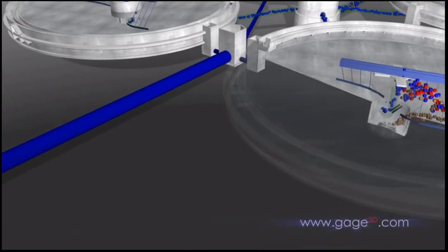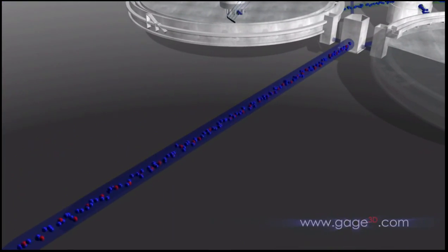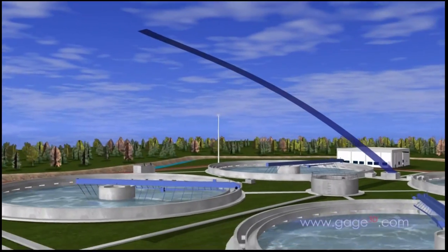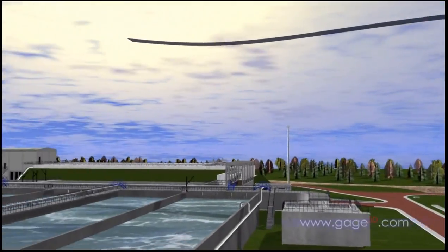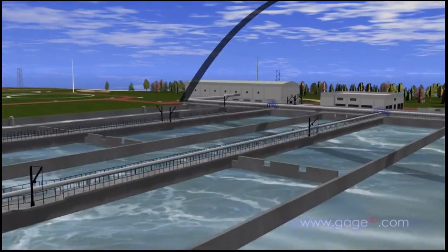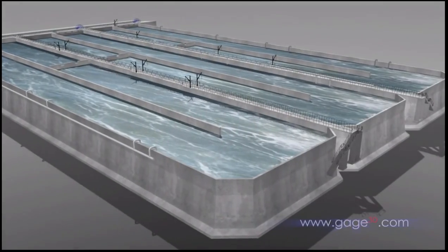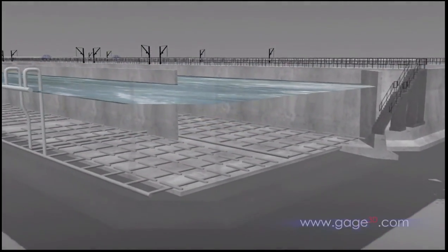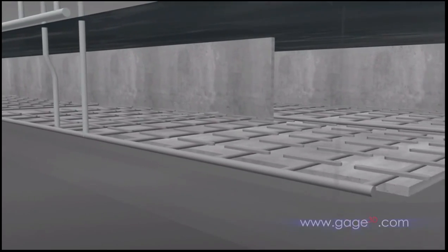The water now travels on to secondary treatment. This part of the process removes nutrients, like phosphorus and nitrogen, which helps keep rivers and lakes clean. Algae thrive in water high in nutrients. When bacteria feed on algae, they use up all the oxygen in the water, creating dead zones that cannot support fish or other aquatic life. However, nutrients are also a valuable resource, particularly for agriculture, and can be recovered through the treatment process.